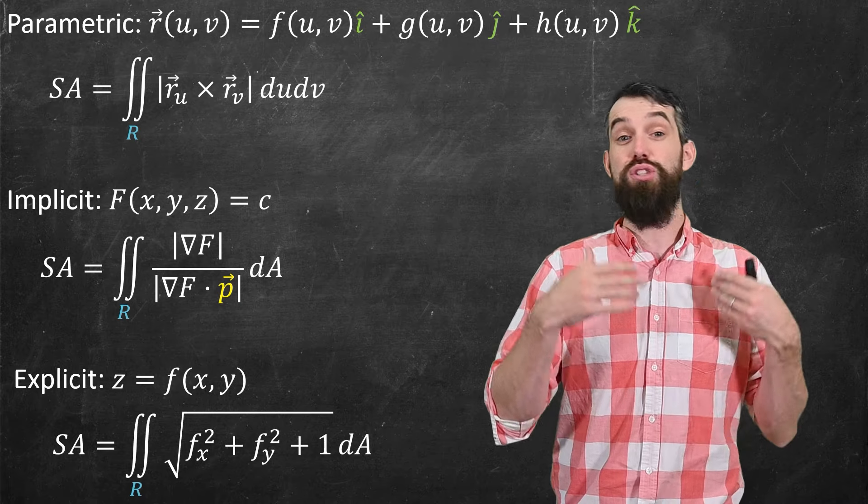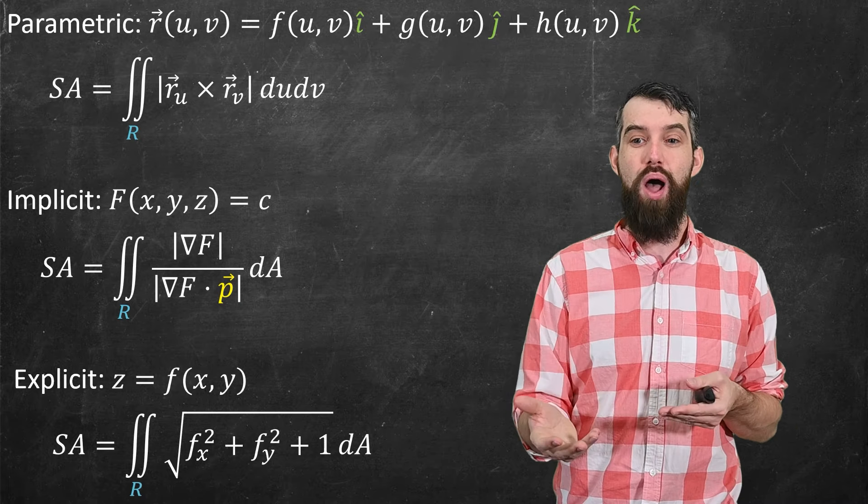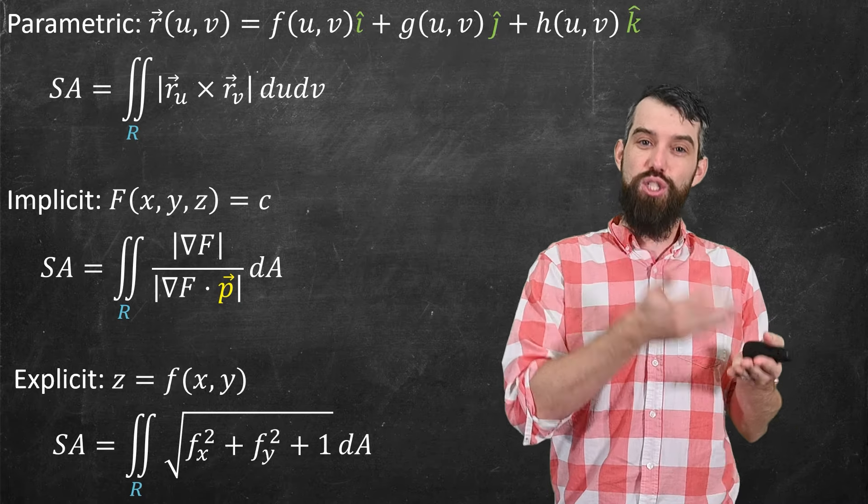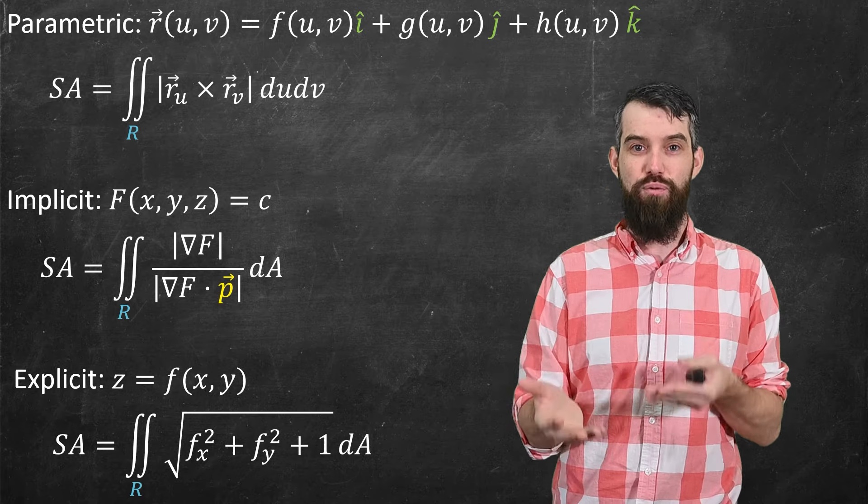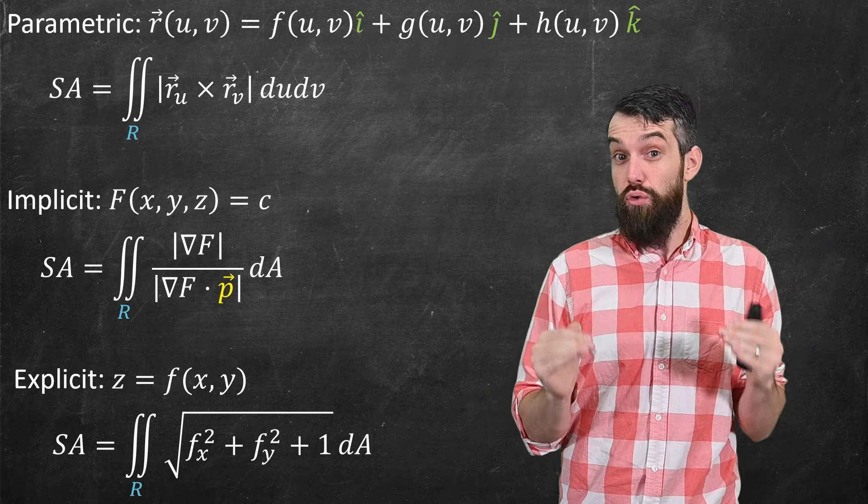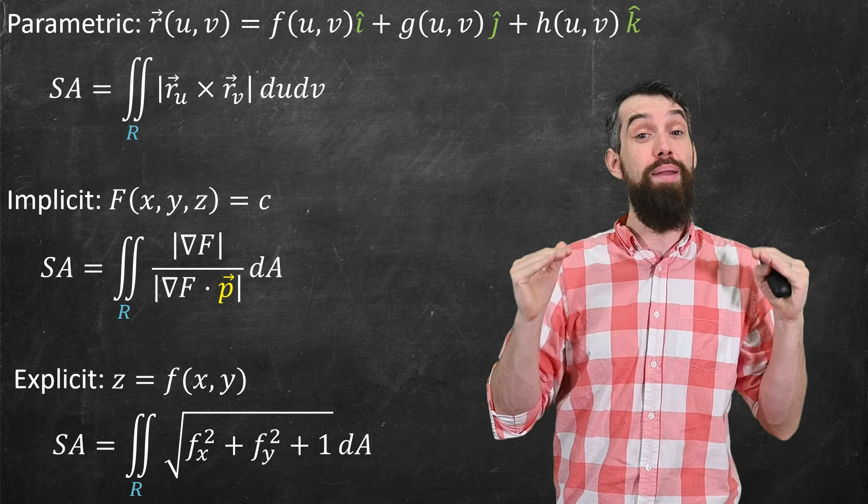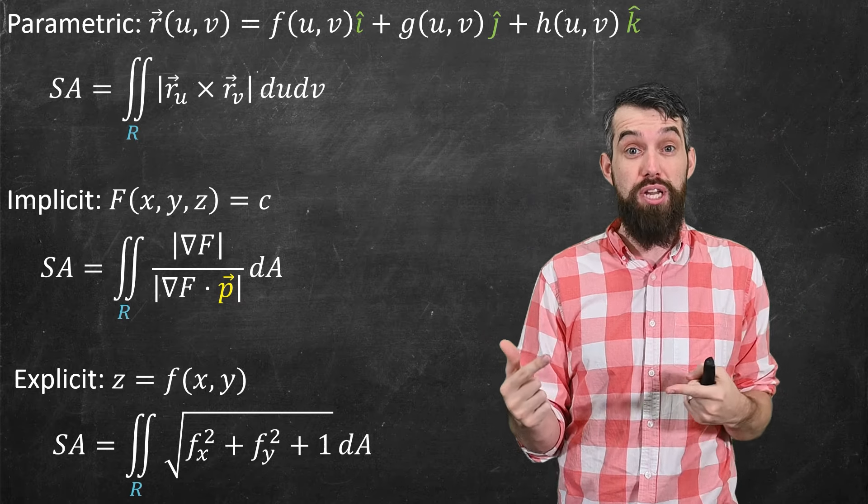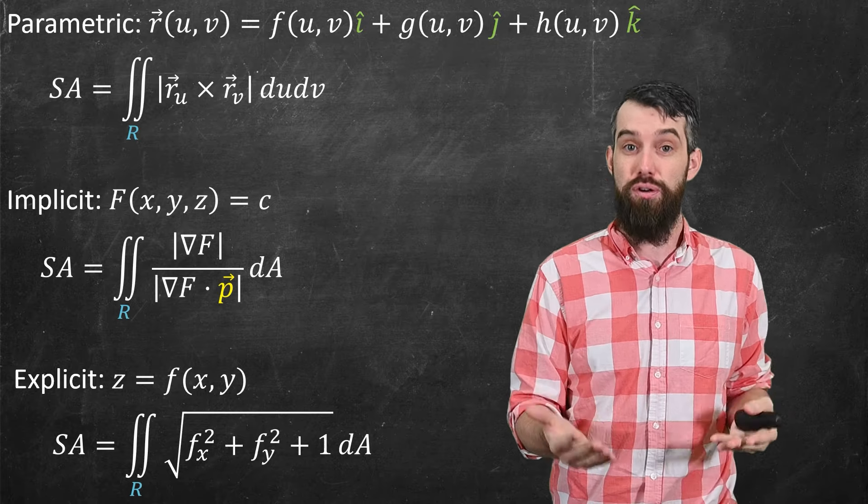And then finally, we saw that when it was described explicitly z as a function of x, y, it could be described as the double integral of the square root of f_x squared plus f_y squared plus 1. So the point is, three different ways to describe a surface, three different methods to compute out the surface area of that surface.